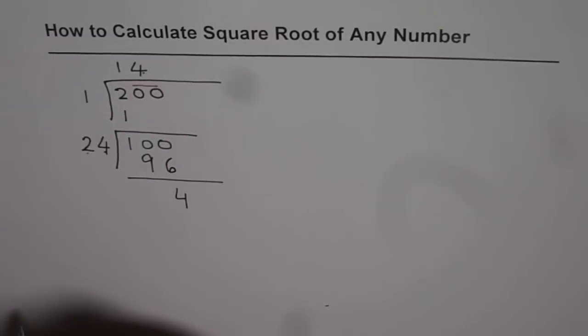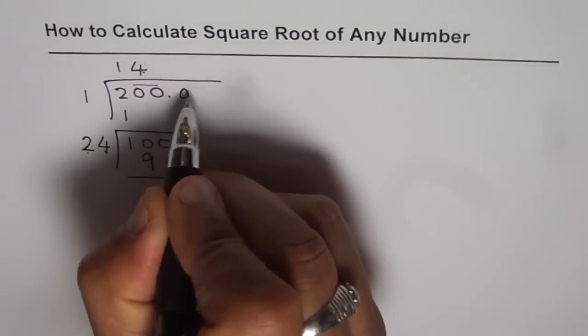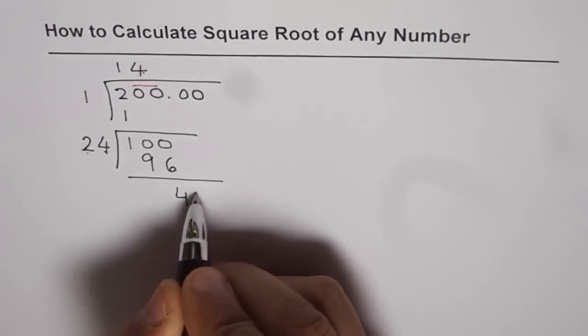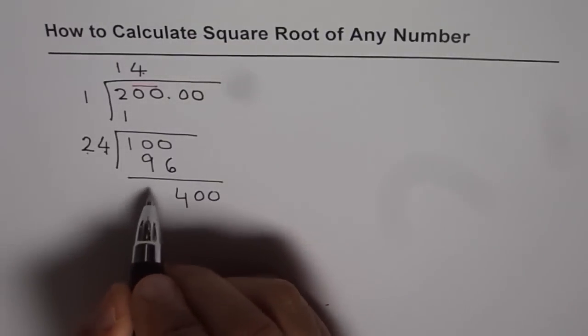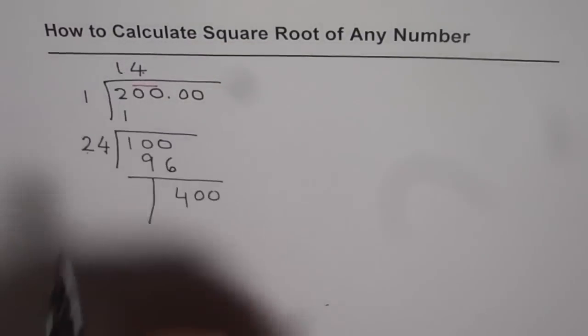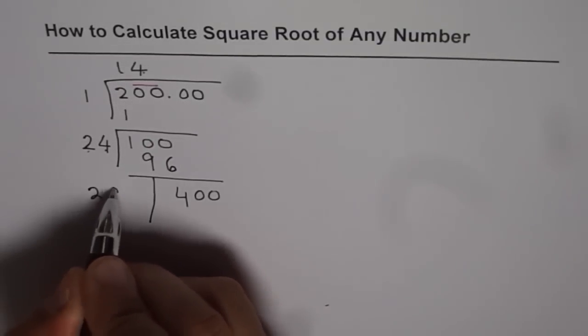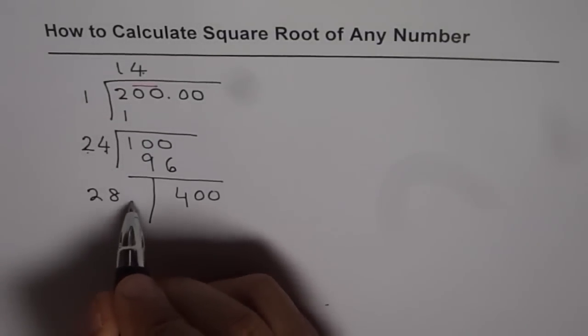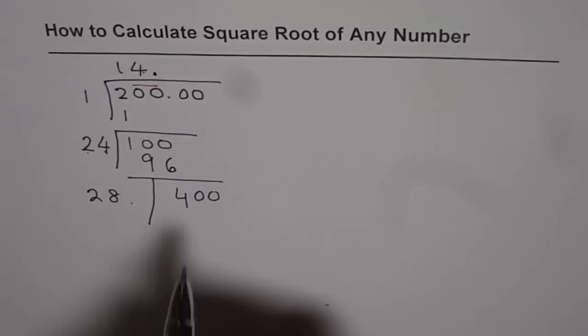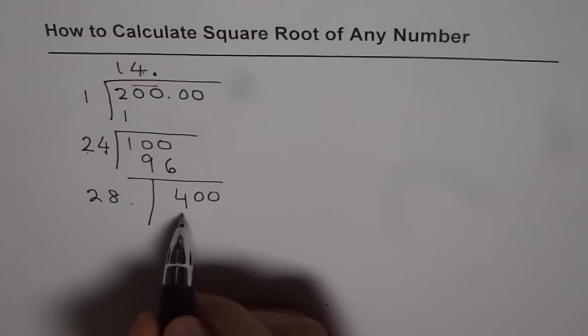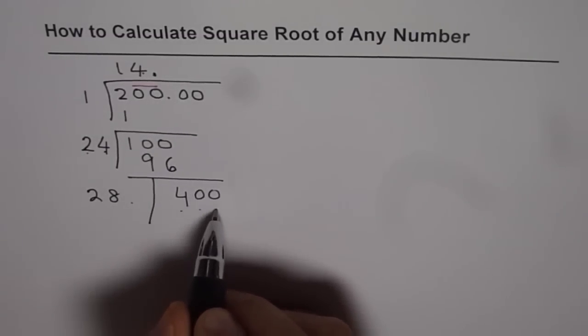If you want to go further, we can add a decimal and two zeros. Bring down both these zeros. Then again, we'll start with our process which is 2 times 14, so the number is 28. Now we have to write some number here and some number there with decimal in between. If I write 1, I get 281.